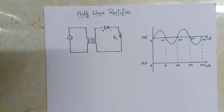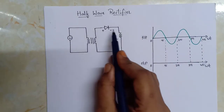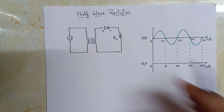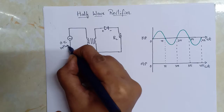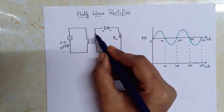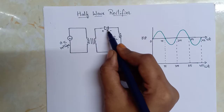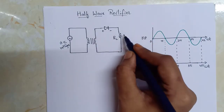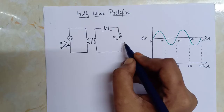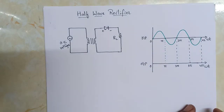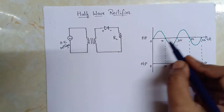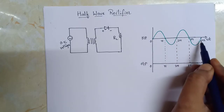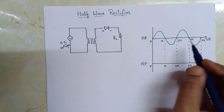In this video we will learn about the half wave rectifier. This is the circuit of a half wave rectifier where the input AC voltage is given to a transformer, and from the transformer it is applied to a junction diode. RL is the load resistor. Let us now see how this half wave rectifier circuit functions.